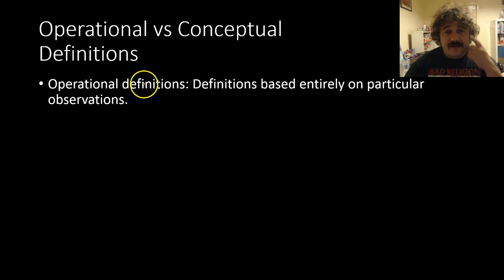So there are two types of definitions. There's operational and conceptual. And there's also a functional definition but we'll not worry about that so much. So operational definitions, they're definitions which are based on observations. So an operational definition is one that really is just on what we can see happening.